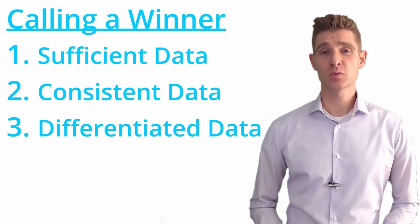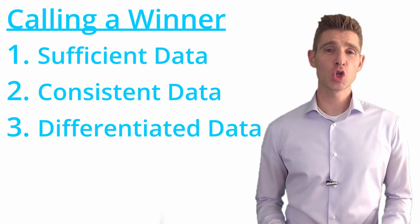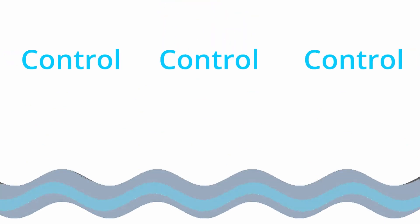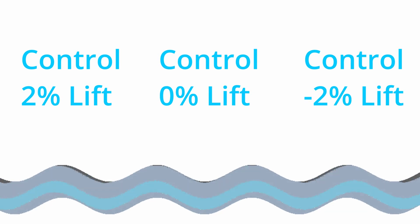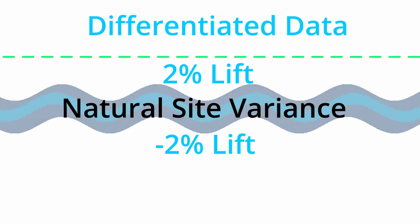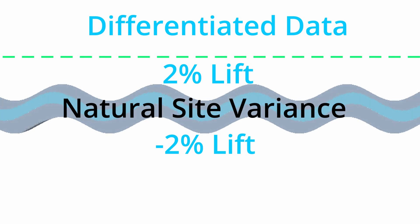The third thing you need is what I call differentiated data — you're looking for a difference in the data. To have differentiated data, you need a lift that is above the natural variance for that site. Variance is the idea that if you do nothing, there are natural fluctuations. You can measure this by running a control-versus-control test. In general, any lift between negative two and positive two percent is what I'd consider natural variance. Anything above +2% or below -2% is likely not natural variance — now you have differentiated data.